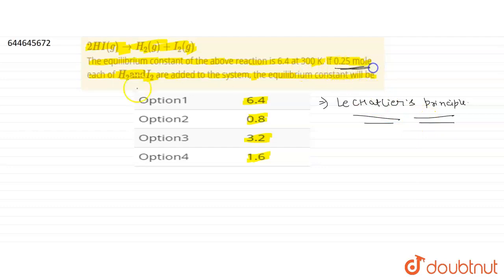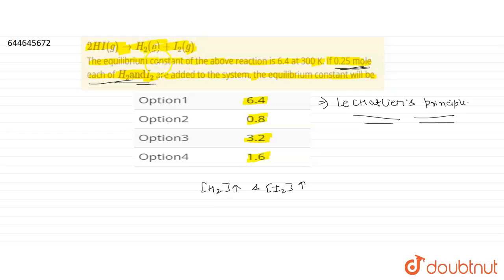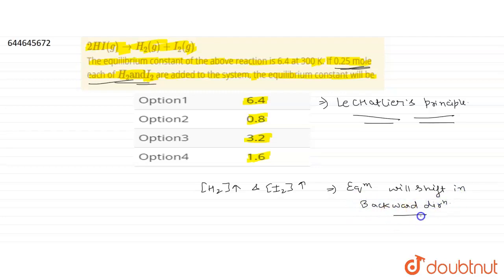If 0.25 moles each of H₂ and I₂ are added, the concentration of H₂ and I₂ increases. The equilibrium tries to minimize this change by decreasing the concentration of H₂ and I₂. To do so, the equilibrium will shift in the backward direction.